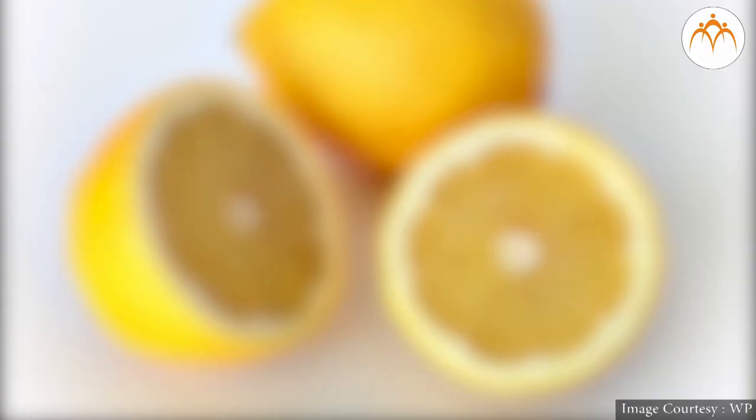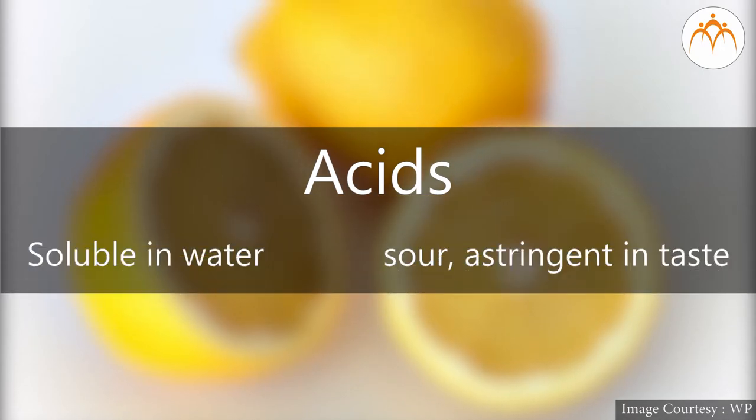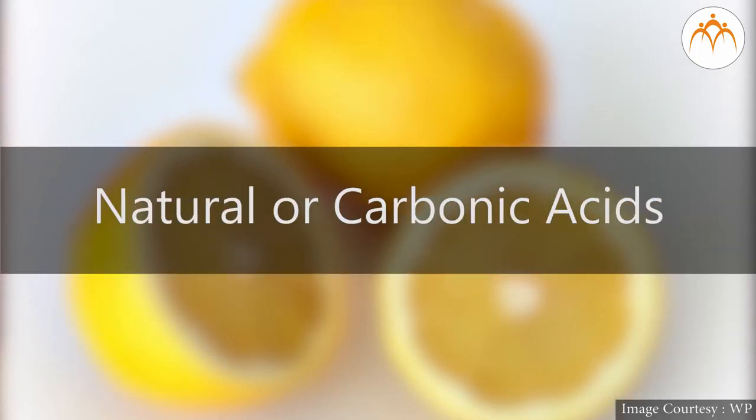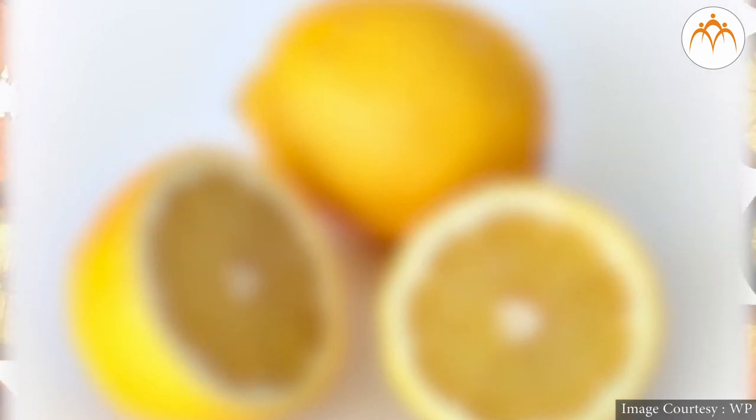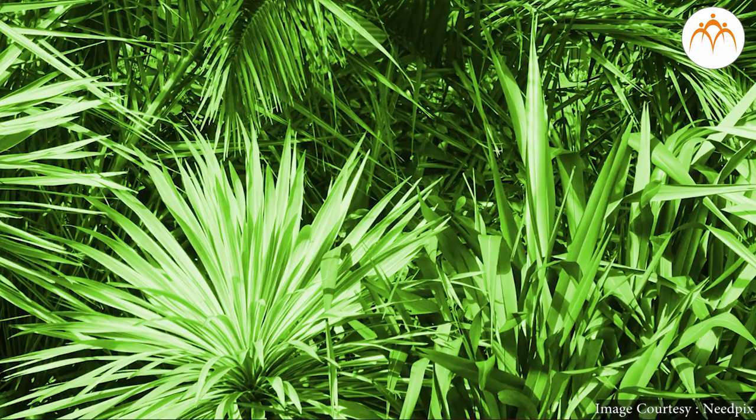Well, acids are soluble in water and taste sour or astringent. Acids present in food are called natural or carbonic acids because they are present naturally and carbon is present in all of them. They are weak and not harmful, hence they are called weak acids. Animals and plants also possess acids in them.